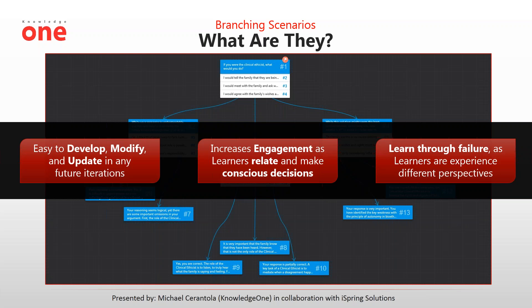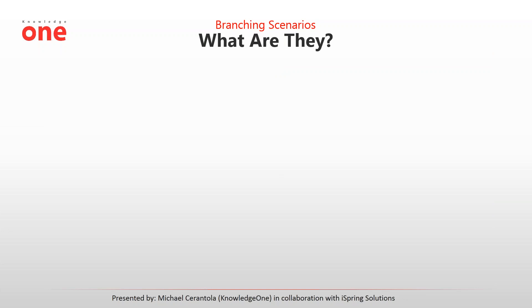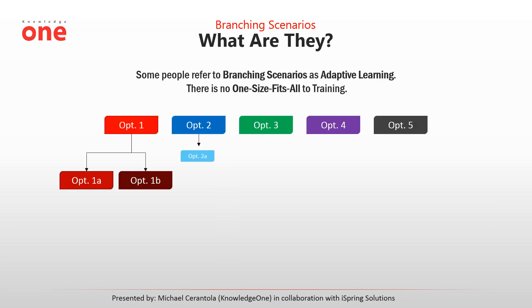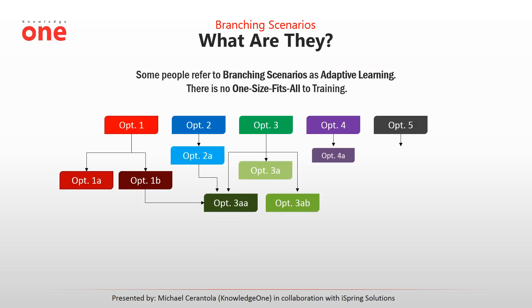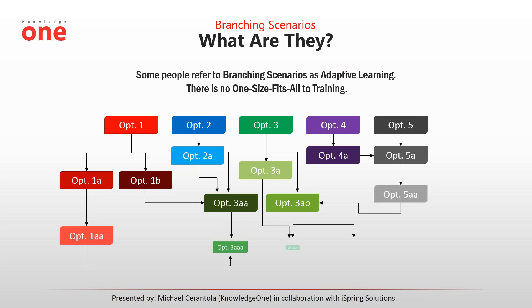Once a branching scenario is written, it takes less time to build than a regular animated lecture slide. Some people refer to branching scenarios as adaptive learning. As this schematic shows, there's no real one-size-fits-all to training — everyone has their own preferred method of working. Some training should remain linear, such as health and safety, factory training, and code of conduct. But most content will benefit from having some adaptive learning.